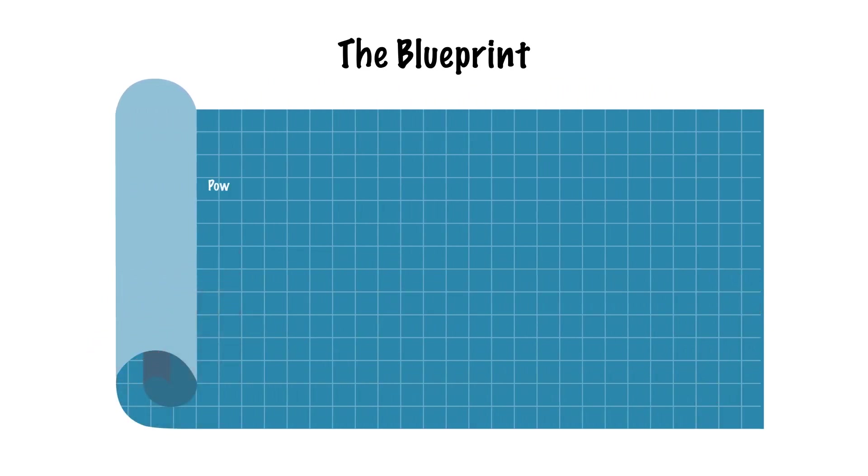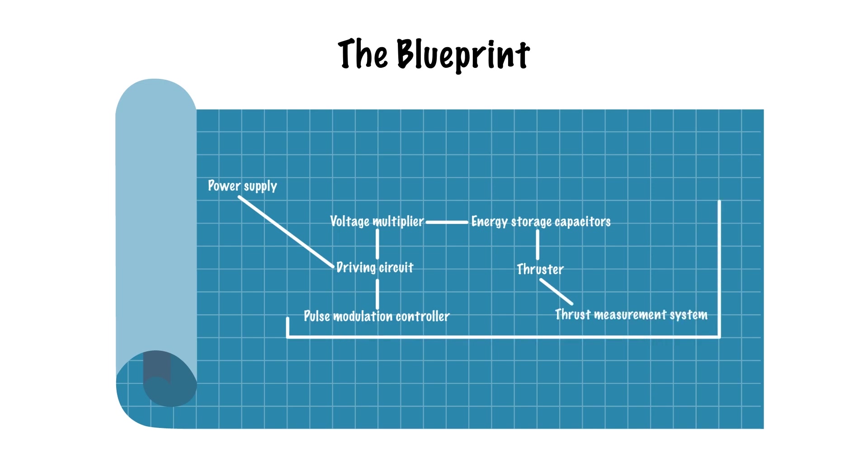So here's the plan. Power is supplied to a driving circuit which then powers up a voltage multiplier. The entire circuit undergoes pulse modulation which effectively charges and discharges the energy storage units which are basically capacitors. These capacitors are then connected to the thruster's electrodes. To measure the efficiency or performance of the thruster, there's a thrust measurement system in place. The real test unfolds inside a vacuum chamber where we simulate the void of space and put our thrusters through the test.